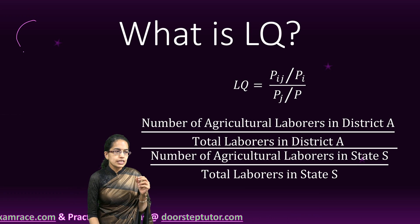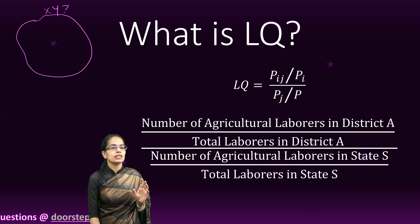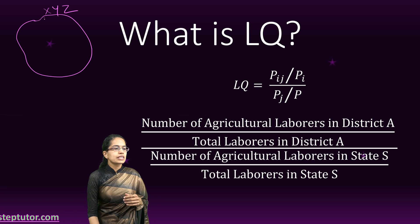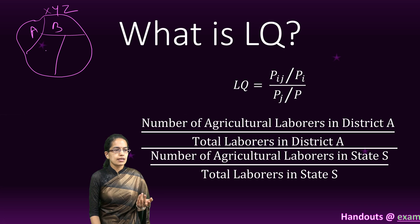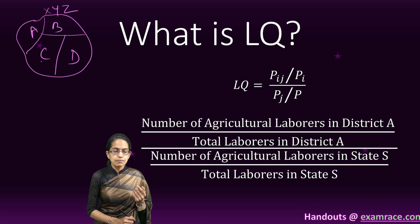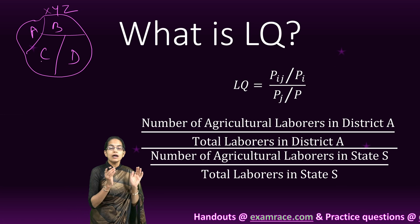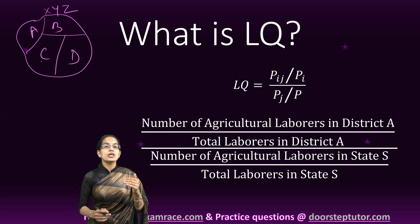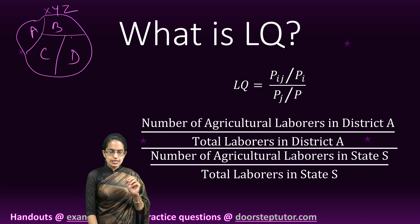Here is a simple example. This is a state — let me name it as XYZ. Within XYZ I have various districts, let me name those as A, B, C and D. I want to understand the number of agricultural laborers in any of the districts of this state XYZ.